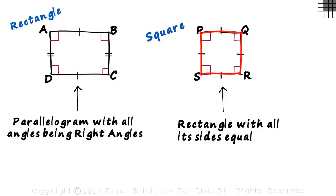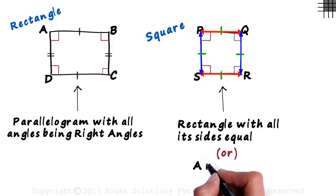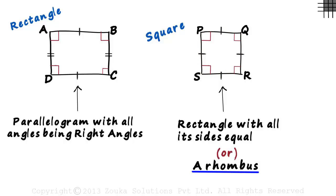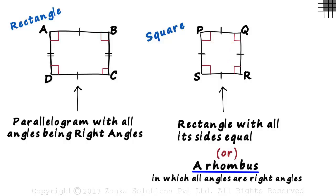But wait! In a square, the opposite sides are parallel, so it is a parallelogram. All its sides are also equal, so it's also a rhombus. What is a rhombus? It is a quadrilateral with all its sides equal and opposite sides parallel to each other. How is the square different from a normal rhombus? It is a rhombus in which all angles are right angles. Next, we will review all the types of quadrilaterals and how they are related to each other.